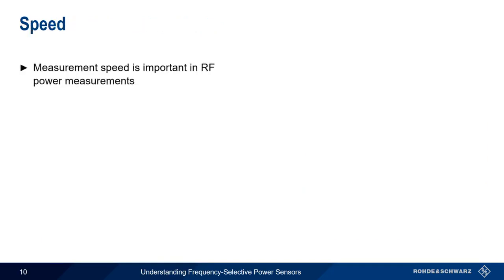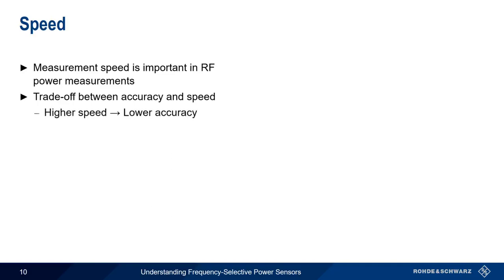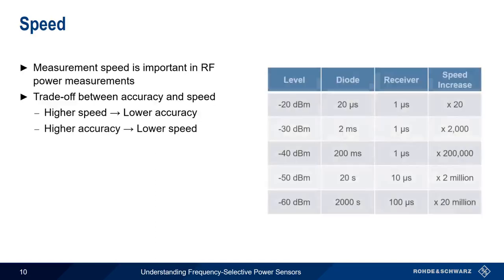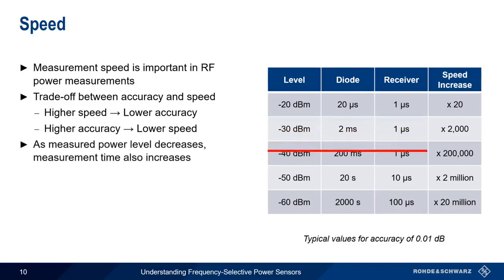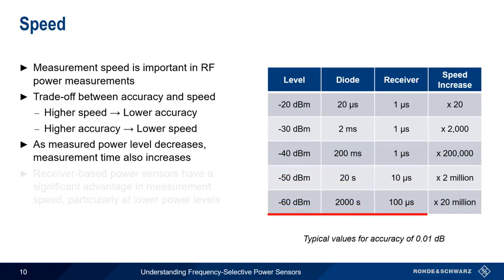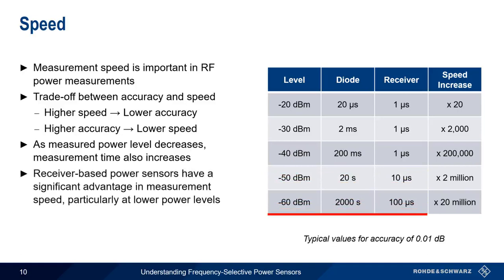Measurement speed is also an important consideration in RF power measurements, and the classic trade-off is between accuracy and speed. Higher measurement speeds will reduce accuracy, and higher accuracy requires longer measurement times. Let's look at some typical measurement times for a fixed accuracy of 0.01 dB. Notice that measurement time increases as the measured power level decreases. In all cases, receiver-based power sensors offer a significant advantage in measurement speed, and this improvement is quite dramatic at lower power levels.